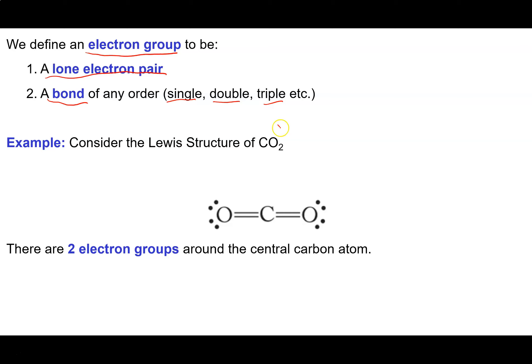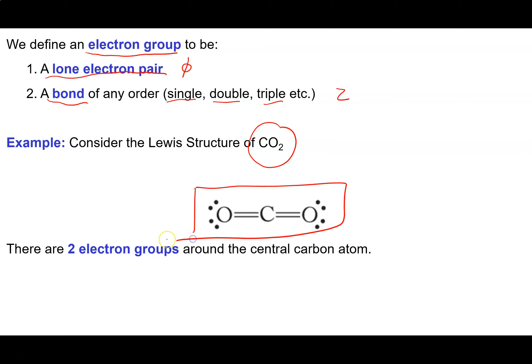To figure out the number of electron groups in carbon dioxide, we begin with an accurate Lewis structure. The carbon is connected to each oxygen via double bonds. There are zero lone electron pairs on the carbon atom, and there are two bonds. So this molecule has two electron groups around the central carbon atom.